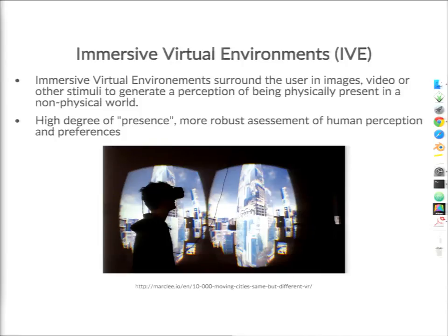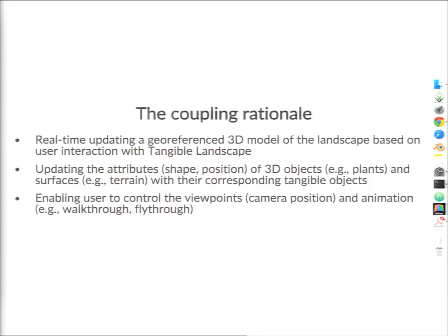An immersive virtual environment, or IVE, is a technology that surrounds users with a continuous stream of stimuli tied to the user's head or body, creating a feeling of physically being present in a non-physical world. It has a high degree of presence and is a very robust tool for assessing people's perceptions. The rationale behind the coupling is based on an adaptive 3D modeling framework — the idea was to generate a georeferenced 3D model of the landscape under study in which all elements, attributes, and their behavior are tied to the corresponding object in Tangible Landscape, enabling users to control viewpoints and navigate within the landscape.